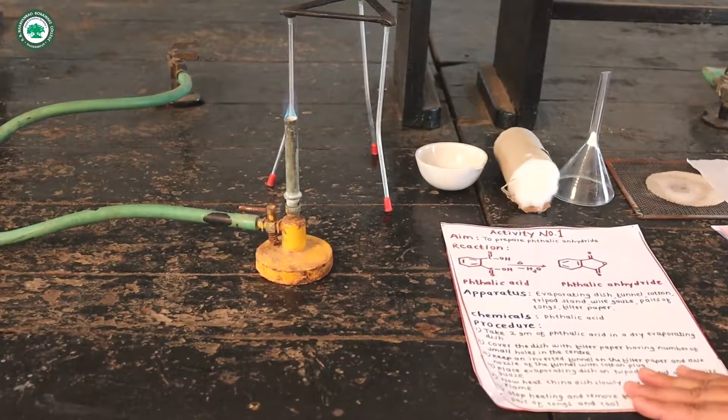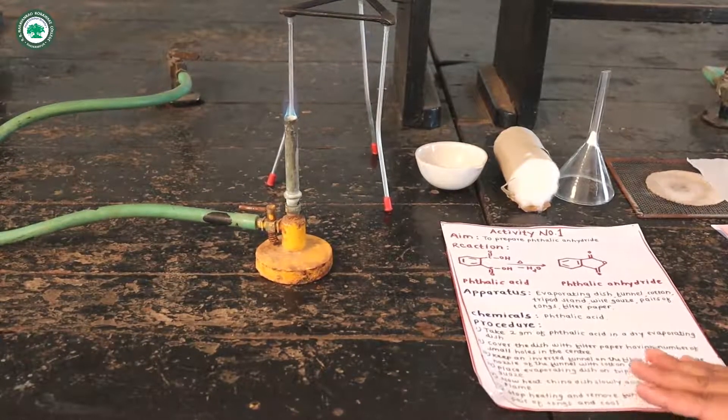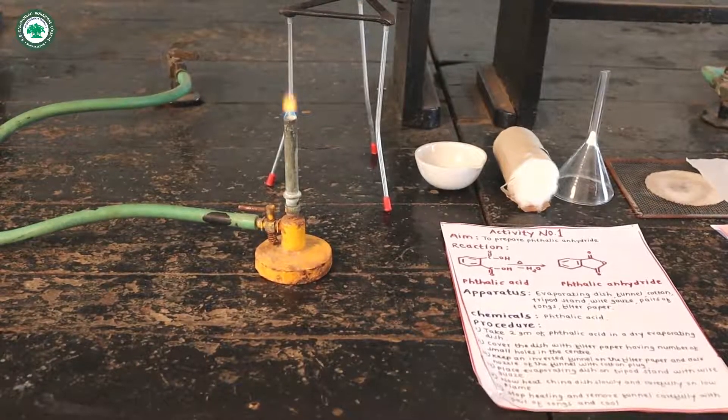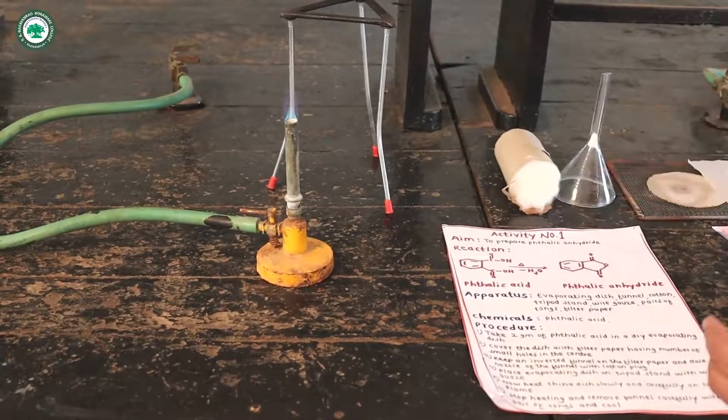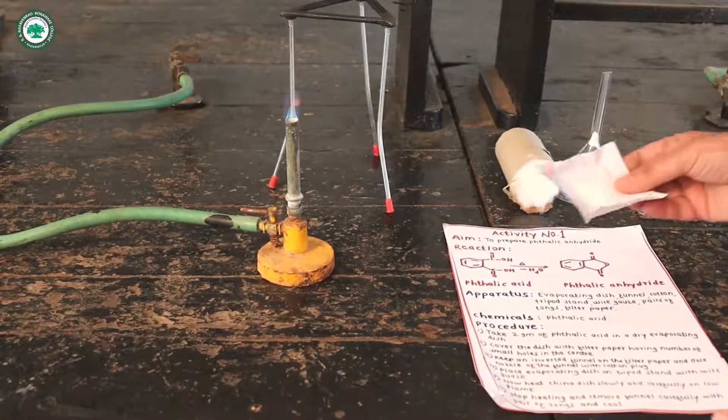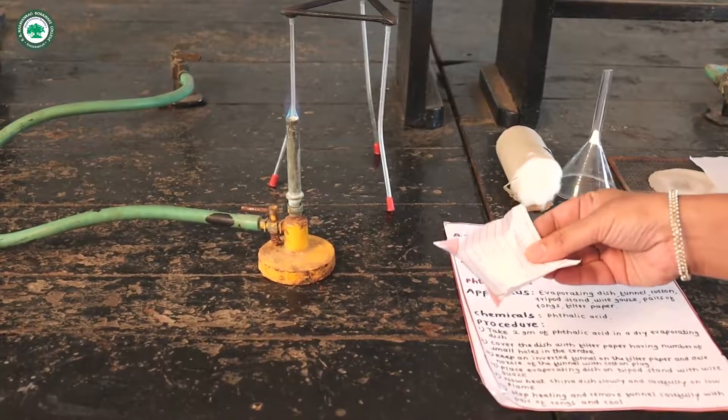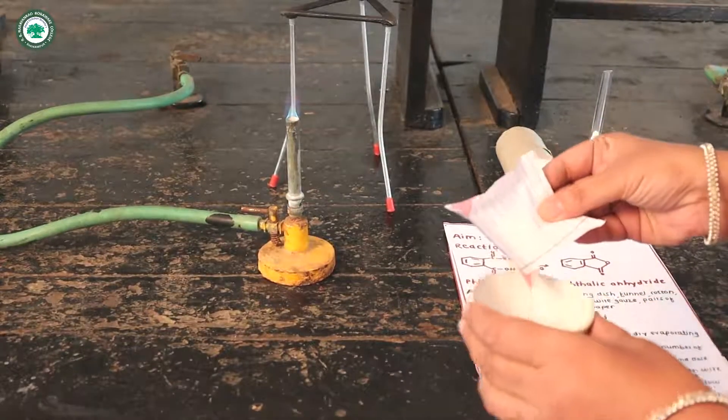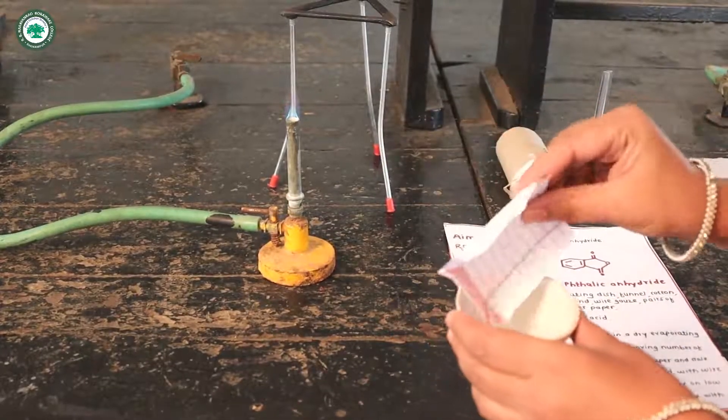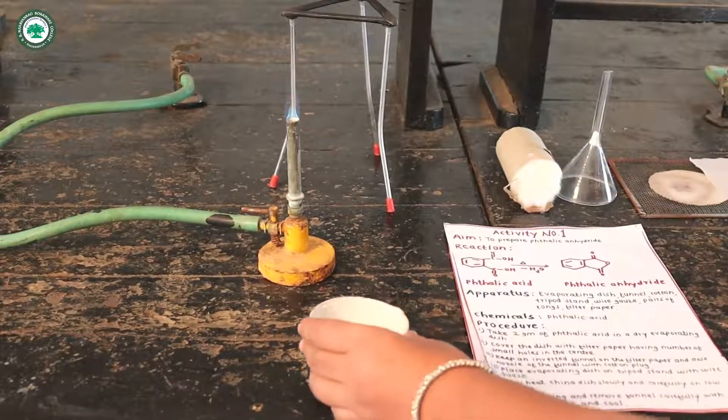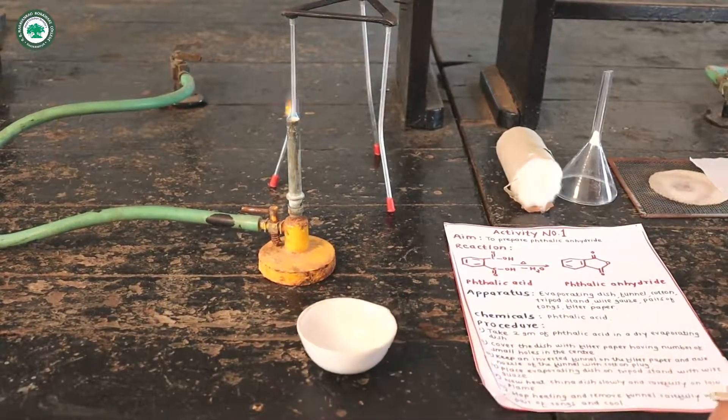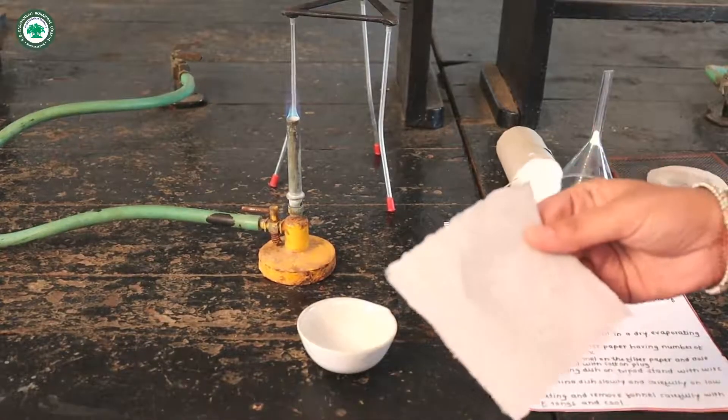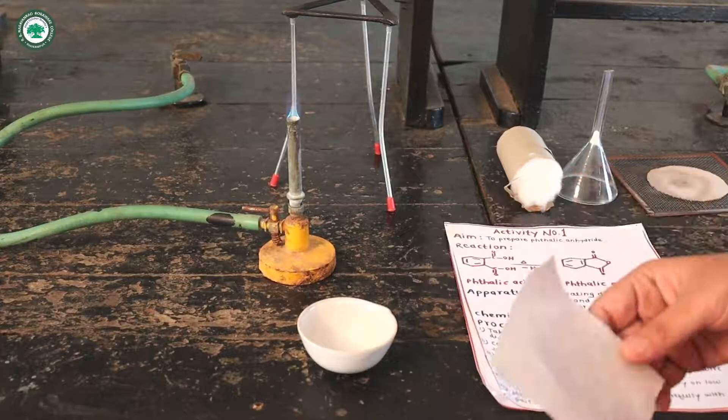Now take 2 grams of phthalic acid in a dry evaporating dish. Then cover the dish with filter paper having number of small holes at the center.